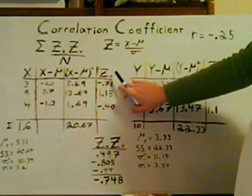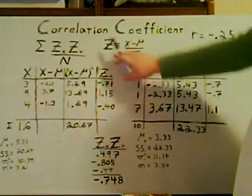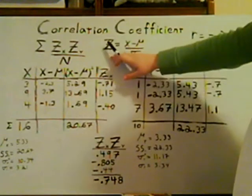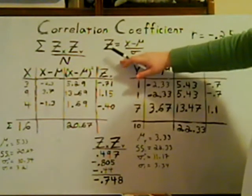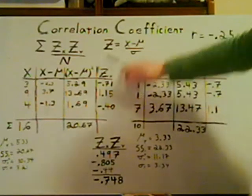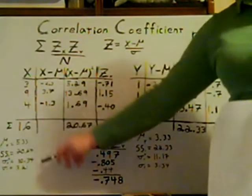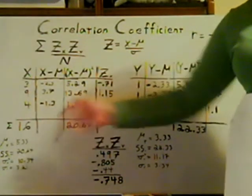For the z-scores, we go back to our original z-formula of x minus mu divided by the standard deviation — and we have all that information now.